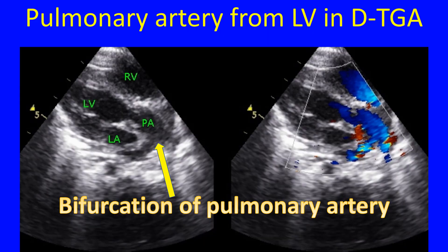The aorta and pulmonary artery are identified by their arch and bifurcation respectively on tracing distally. The pulmonary artery arising from the left ventricle is seen as the bifurcating vessel in this echocardiogram in a modified parasternal long axis view in transposition of great arteries.